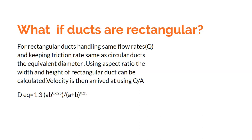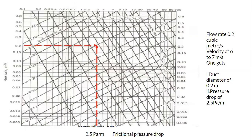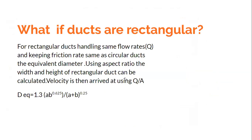One important caveat when using this chart for a rectangular duct: the velocity read from the chart — in my example, 6.8 meters per second — is not to be taken as the velocity for the rectangular duct. To find the actual velocity in a rectangular duct, you must take the flow rate Q and divide it by the area of the rectangular duct (Q/A). Do not obtain velocity from the friction chart when the duct is rectangular.